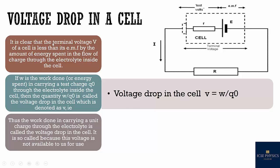Voltage drop in a cell: terminal voltage is always less than EMF by an amount of energy spent in the flow of charge through the electrolyte inside the cell. If W is work done in carrying a test charge q through the electrolyte inside the cell, then the quantity W/q is called the voltage drop in the cell, denoted by small v. It is so called because this voltage is not available to us for use — a small amount of voltage is always lost inside the cell.